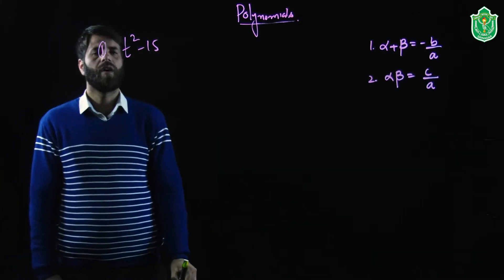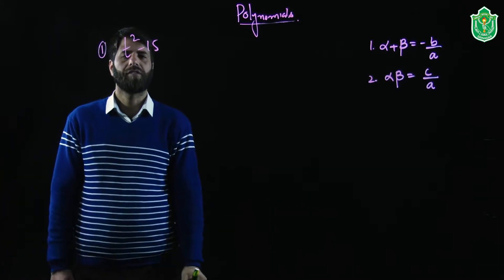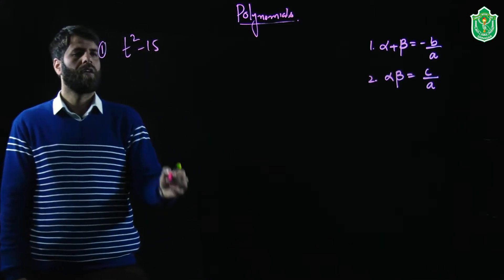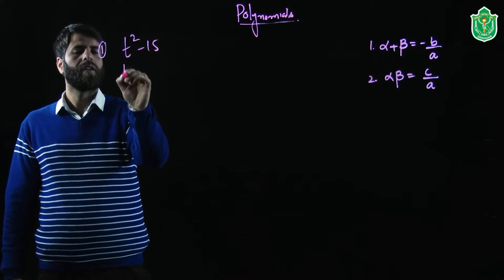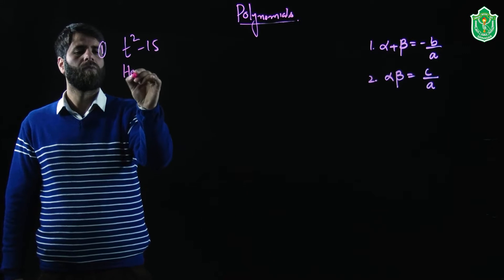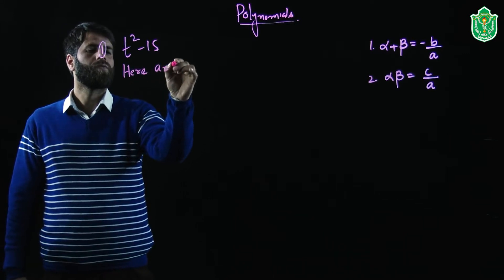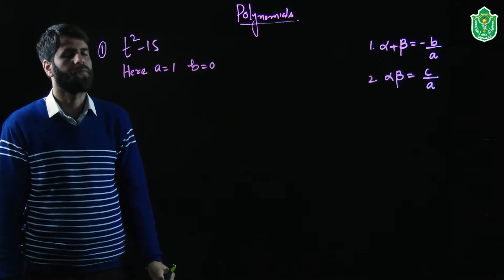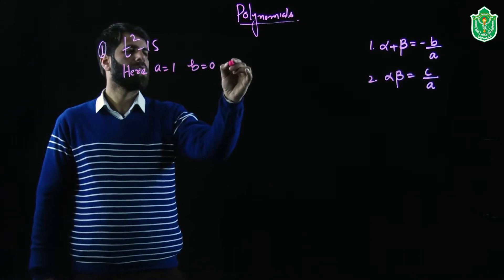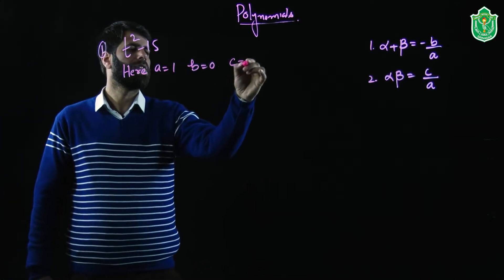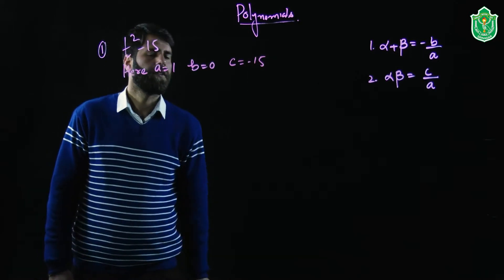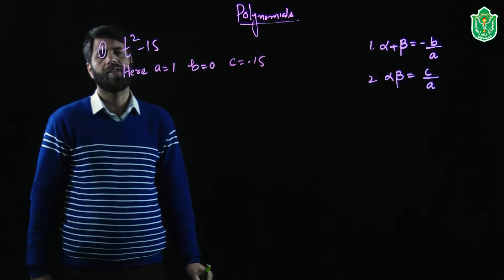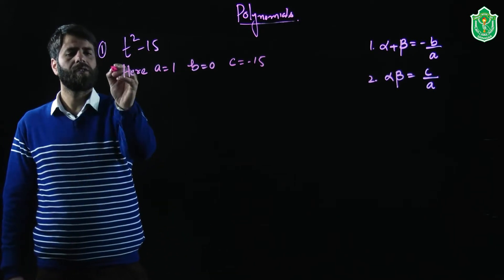As far as the question is concerned, suppose we have t squared minus 15 as a quadratic polynomial. We have to find the relationship between zeros and coefficients. If we compare this polynomial, here a is 1, b is absent so b is 0 because the middle term is absent, and the last term c is equal to minus 15.